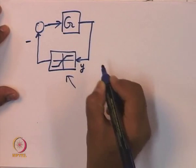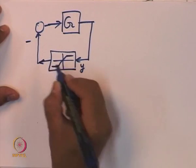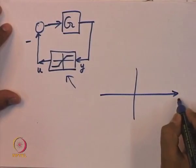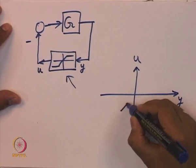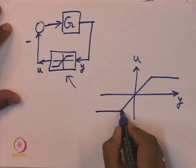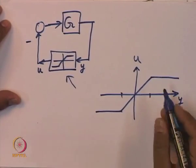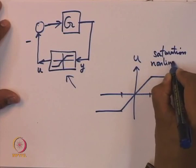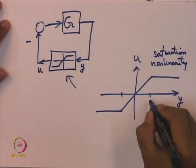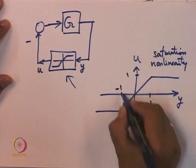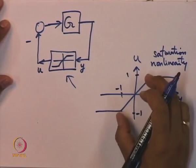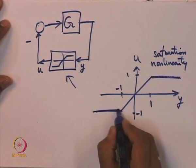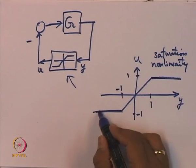Suppose the input to this saturation nonlinearity is y and output is u. The graph of this is: up to some value it is linear, and outside some value it saturates. We will call this saturation nonlinearity. To make it standard, the linear range is from minus 1 to plus 1 with slope 1, and it saturates at plus 1 and minus 1 outside that range.